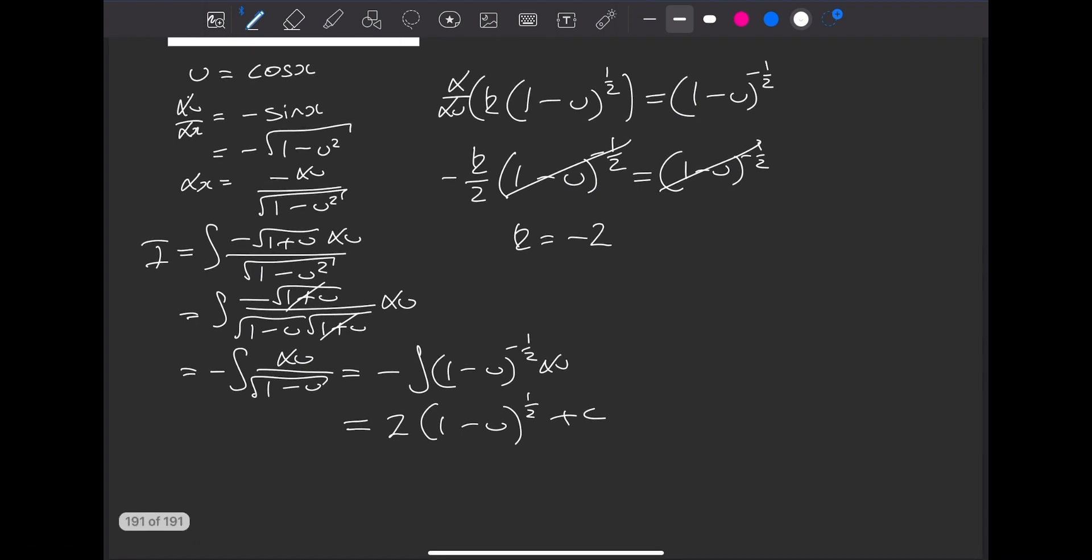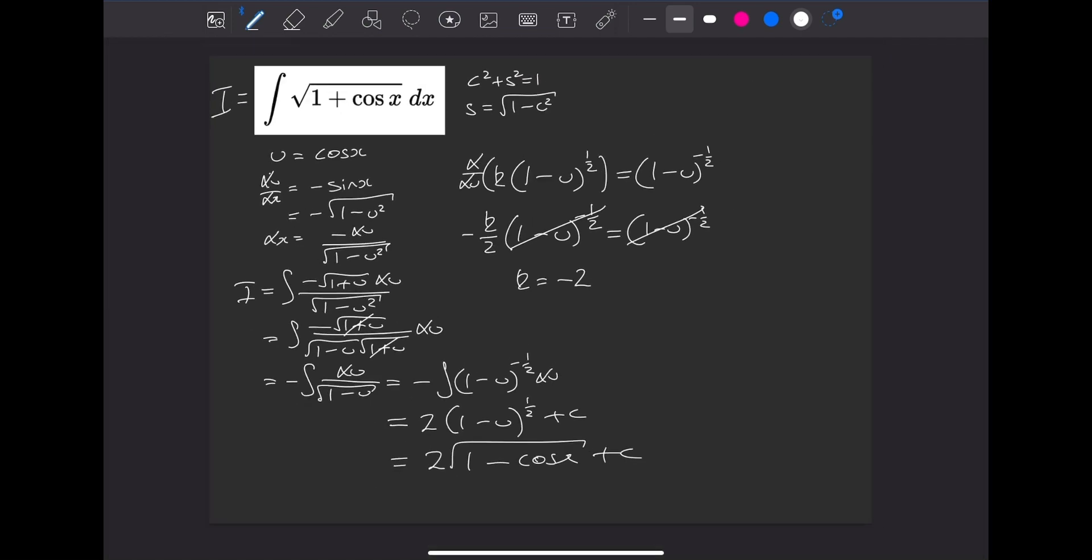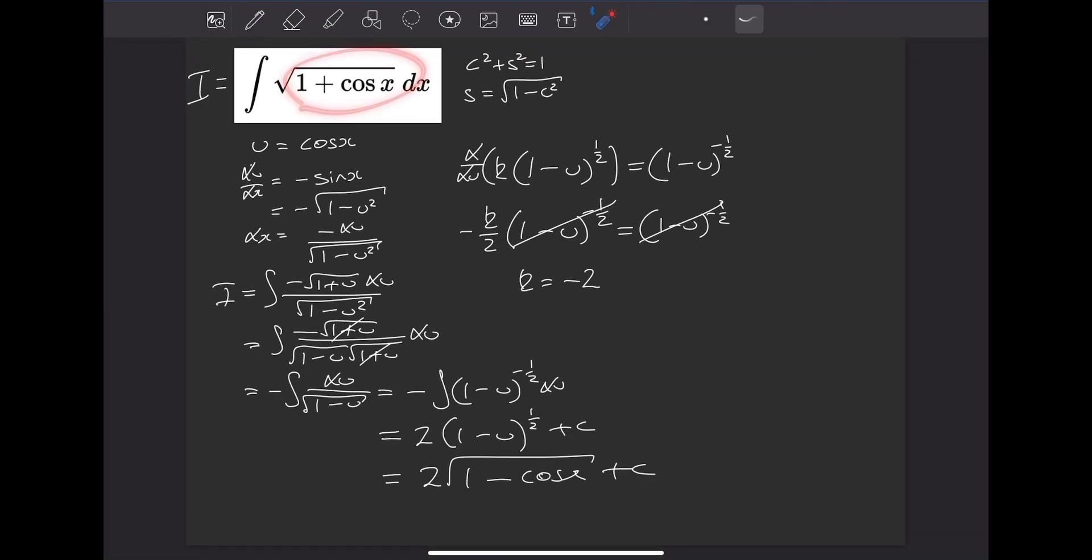Let's plug back in our x instead of our u. So cosine of x replaces the u. We get 2 multiplied by the square root of 1 minus cos x, plus c. So this is very nice. Look how similar it is to what we started with. Yeah, very nice indeed.